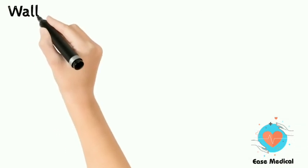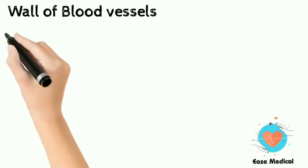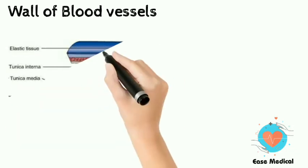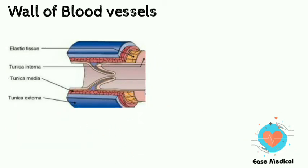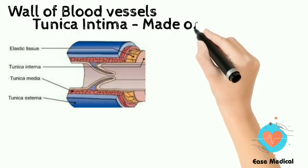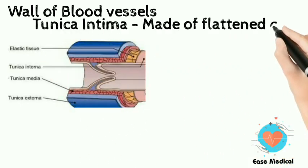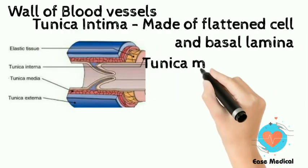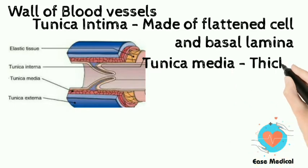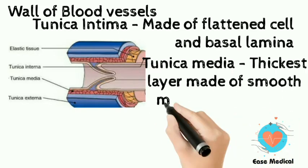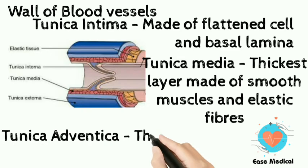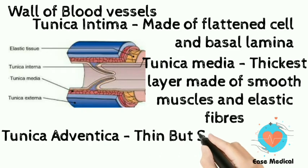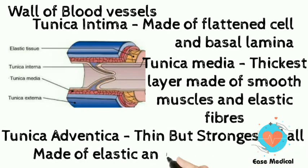The wall of blood vessels is composed of three layers. Tunica intima is made of flattened cells and a basal lamina. Tunica media is the thickest layer, made of smooth muscle and elastic fibers. Tunica adventitia is thin but the longest of all, made of elastic and collagen fibers.